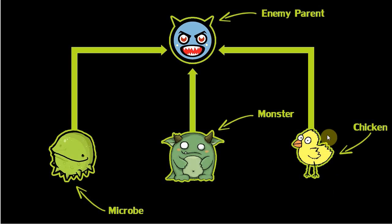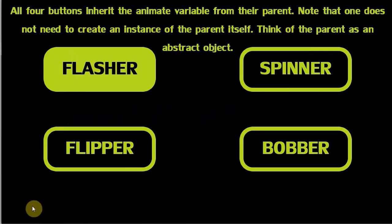Now let's jump to the example I've created. We've got four buttons: flasher, flipper, bobber and spinner. Now these buttons are all the same thing — they're all buttons, they need to be clicked, they perhaps need to animate. Knowing this, you could have the animation and all the code that handles the clickables in each of them, but that's a lot of repeated code. And if you're doing copy-pasting that's going to create some errors.